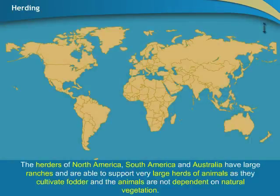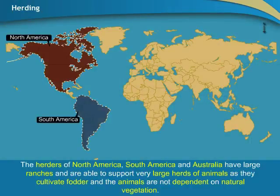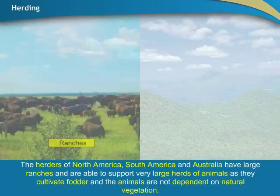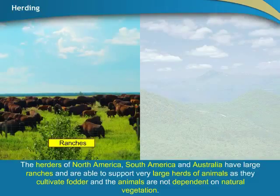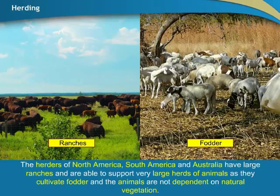The herders of North America, South America and Australia have large ranches and are able to support very large herds of animals as they cultivate fodder, so the animals are not dependent on natural vegetation.